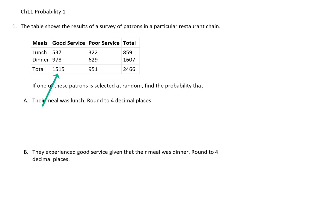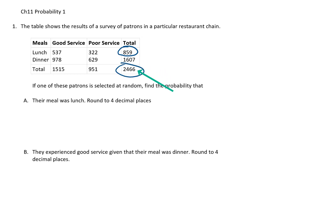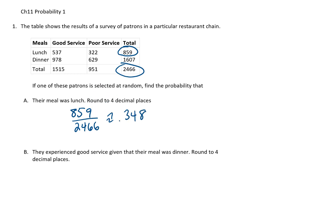The way that this table works is we have our totals along the bottom of the table and along the right side of the table. It looks like our total number of patrons that came for lunch was 859, and the total number of patrons in the restaurant was 2,466. So the probability that a randomly selected patron was there for lunch is 859 divided by 2,466, which turns out to be 0.3483, rounded to four decimal places.